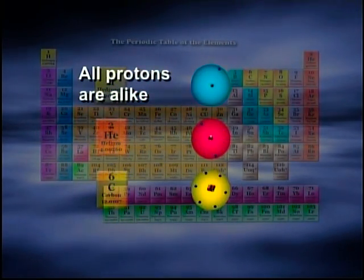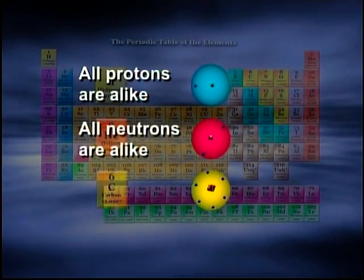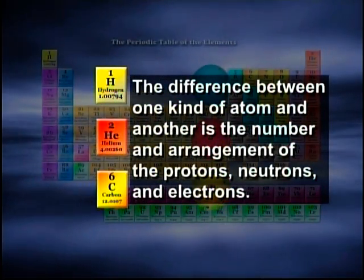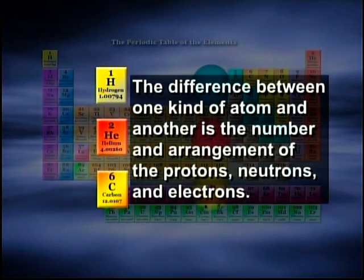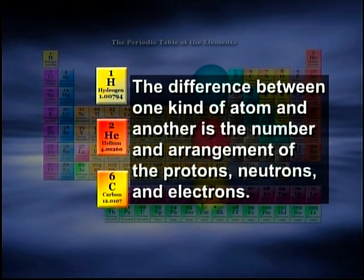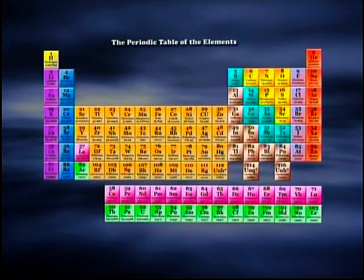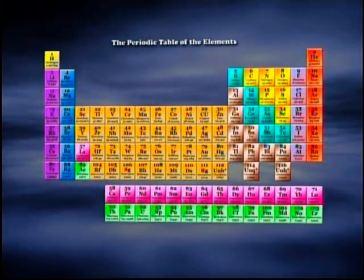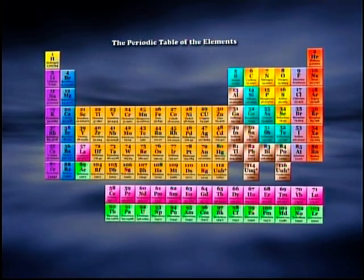All protons are alike, all neutrons are alike, and all electrons are alike. The difference between one kind of atom and another is the number and arrangement of the protons, neutrons, and electrons. There are over 100 different kinds of atoms, and they're listed in the periodic table of the elements.